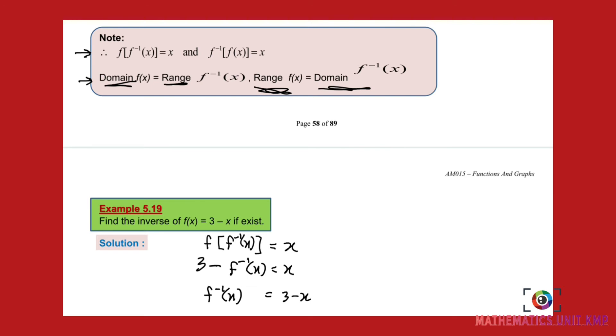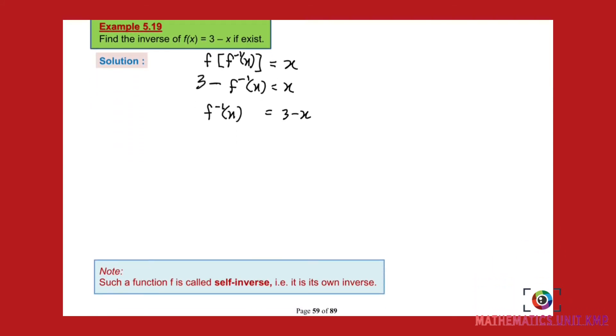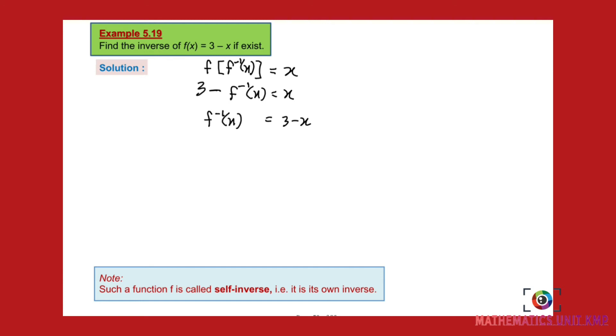Okay, when you look at this, f inverse is the same as f(x), right? f inverse x is 3 minus x, f(x) is also 3 minus x, the same function. So there's a remark below: such a function f is called self-inverse. Okay, when they are the same, we call that function self-inverse. That's the conclusion.